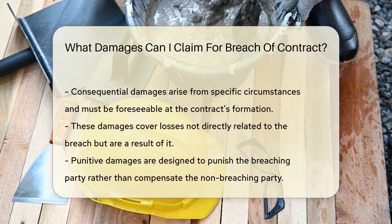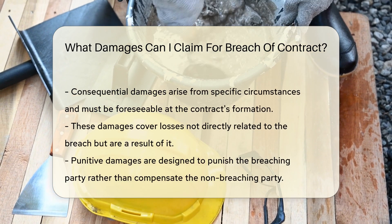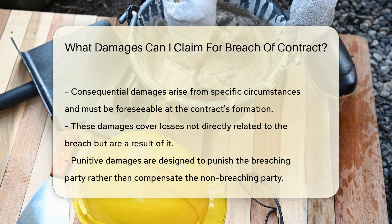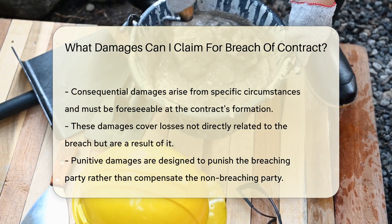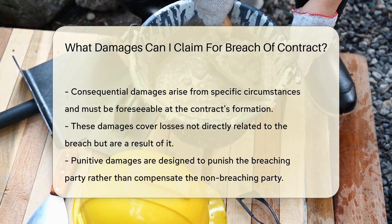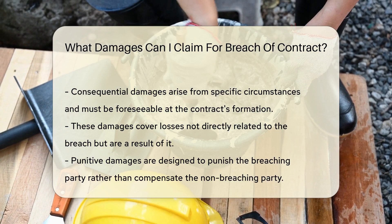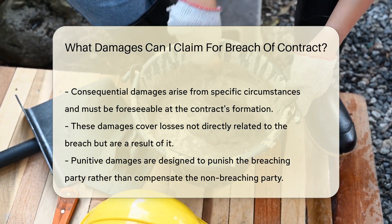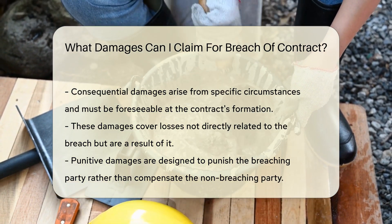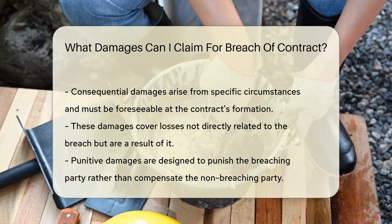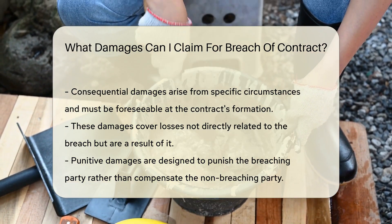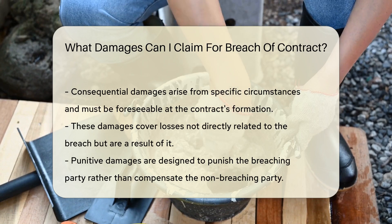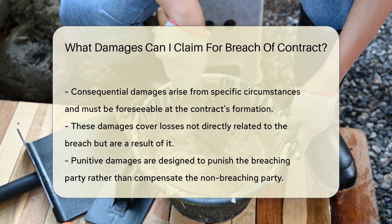Another type of damages is consequential damages. These damages arise from the specific circumstances of the case and must be foreseeable at the time of the contract's formation. They can cover losses that are not directly tied to the breach, but are a consequence of it.